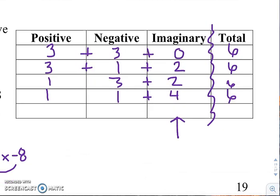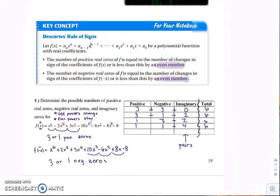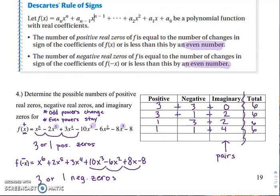Imaginary values should always come in pairs — you should never have one imaginary solution or three possible imaginary solutions, because imaginaries always come in conjugate pairs. So if you have 2i as a possible solution, then you should also have negative 2i — you never have an odd number; it should always be pairs. What Descartes' Rule really tells us is the possible combination of types of solutions you can have to a polynomial. It doesn't tell you what they are, but it narrows down the scope — one possible combination could be 3 positive, 1 negative, and 2 imaginary, or 3 positive and 3 negative. It gives you the combination of the types of solutions.